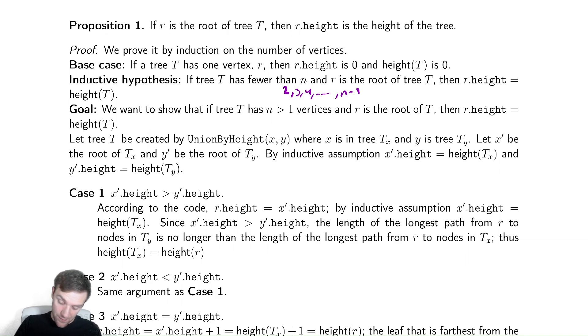And now let's just look at the three different cases in our code. If x prime dot height is greater than y prime dot height, let's see what we have. We claim because we don't update it that r dot height is x prime dot height. By inductive assumption we already knew that the height of x prime was the height of tx.